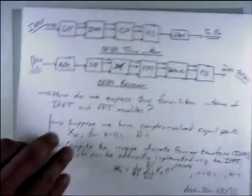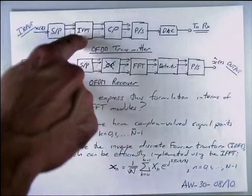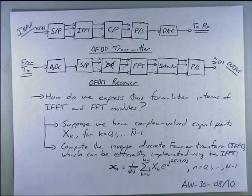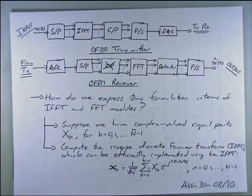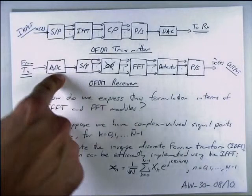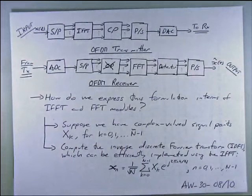The OFDM transceiver: on the transmitter side you have a serial-to-parallel converter that takes the IFFT of every subcarrier, you add the cyclic prefix or suffix, then parallel-to-serial convert it, digitally to analog convert it, and send it to the RF front end to bring it to RF frequency. The receiver picks it up, brings it down to baseband, analog-to-digital converts it, serial-to-parallel converts it, removes the cyclic prefix, takes the FFT, and at the core of all this is the FFT and IFFT.